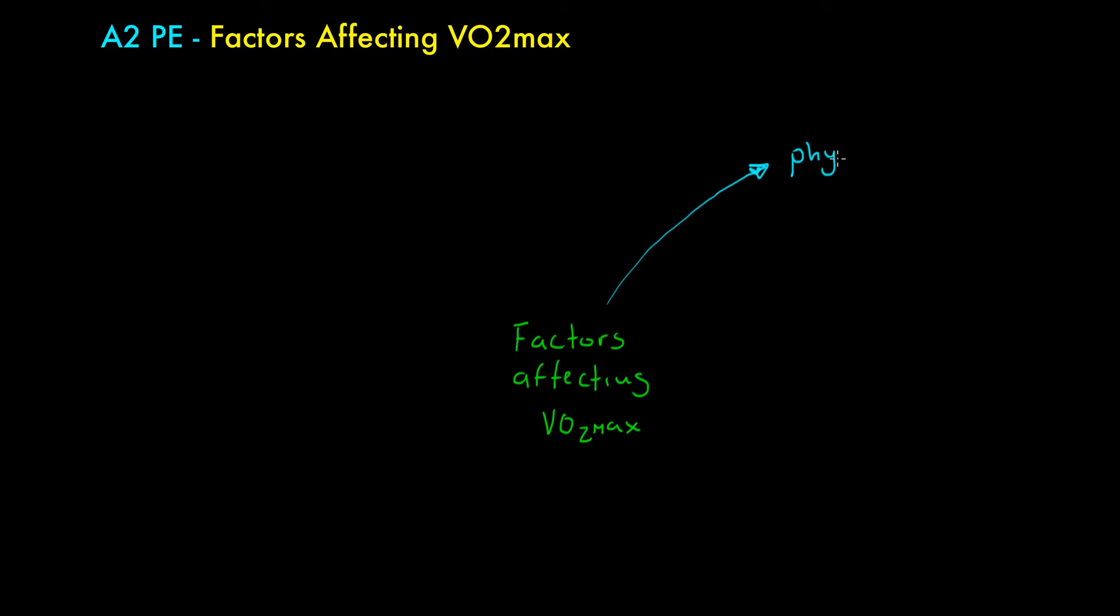We have physiological factors. And of course by physiology we simply mean biological systems. We have some kind of physiology that's different that enables a higher or lower VO2max. So what sort of things could they be? What do we mean by a different physiology?